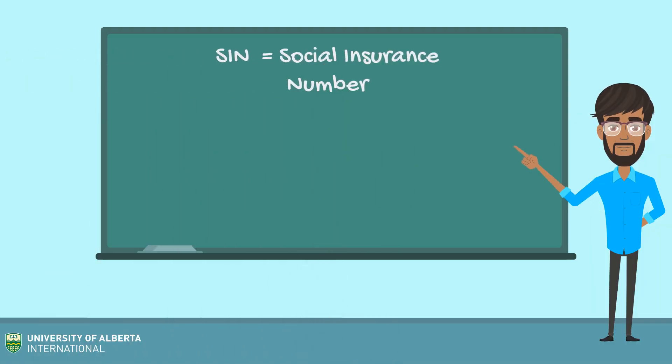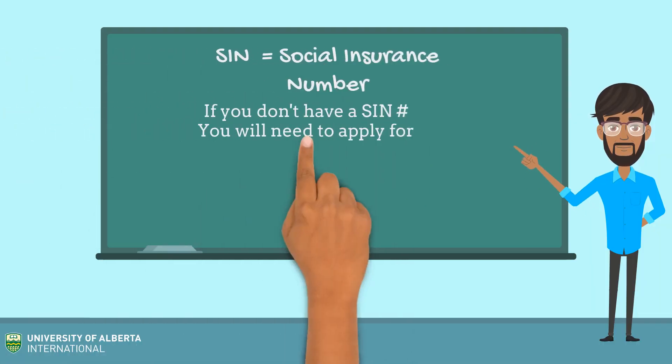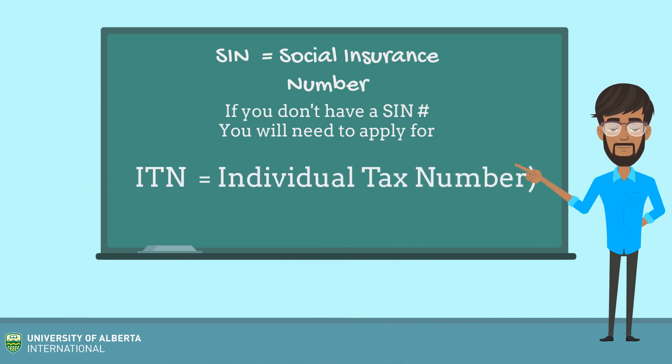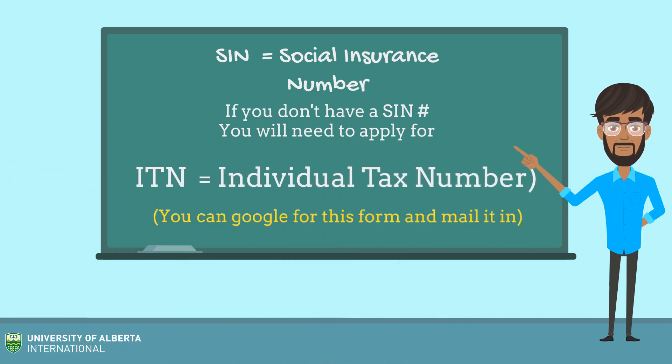A social insurance number allows you to work in Canada, and you will have one if you had a job last year. If you don't have a SIN number, you'll have to get an ITN number.